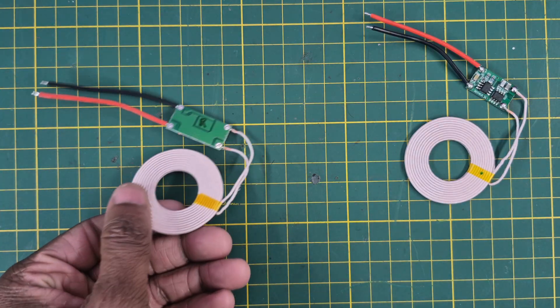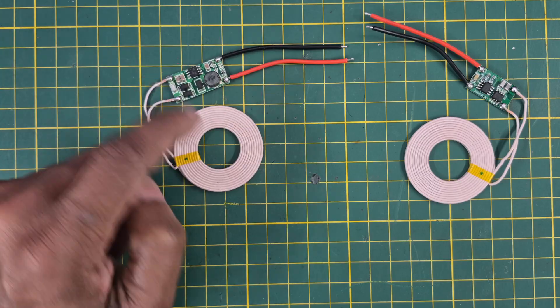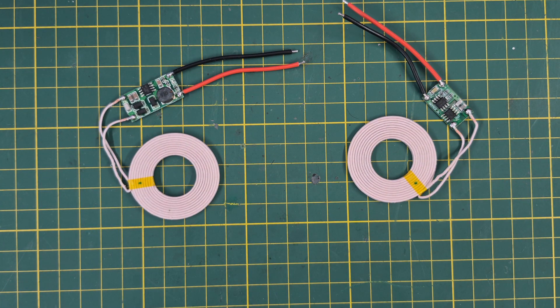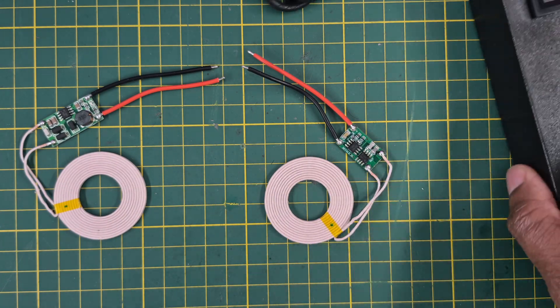If we are connecting power to this receiver, this might damage the module, so we will connect this to the power and we will see how it's working. This model works on 5 volts.